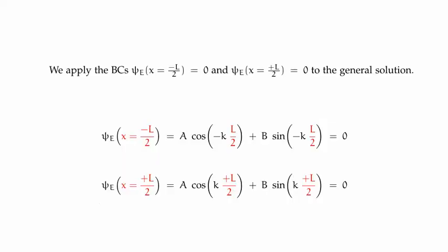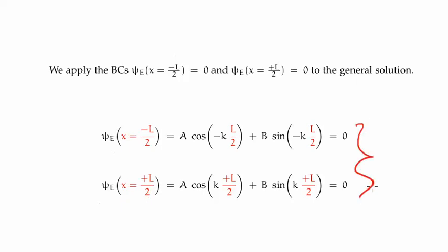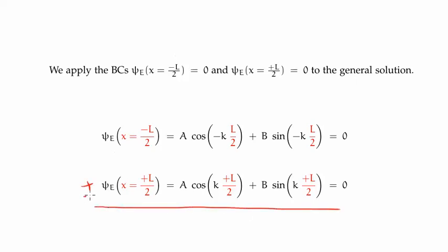Now we apply the boundary conditions by substituting into the general solution of the time independent Schrödinger equation for x. We plug in x equal to negative L over 2 and x equal to positive L over 2, and we know the wave function must be zero at the boundaries. We're going to solve these two expressions as simultaneous equations, which should give us an expression for the wave number k.